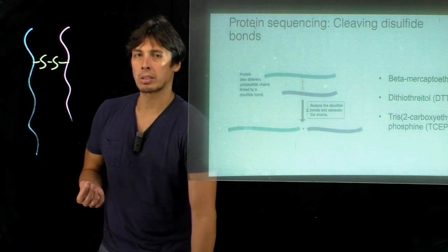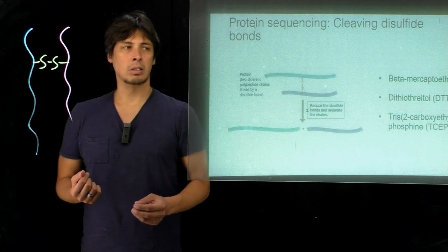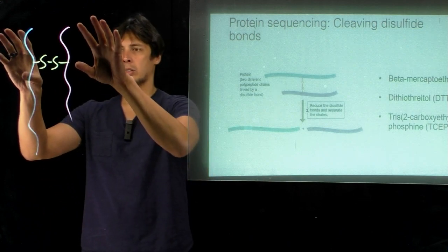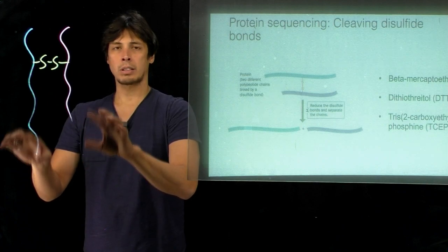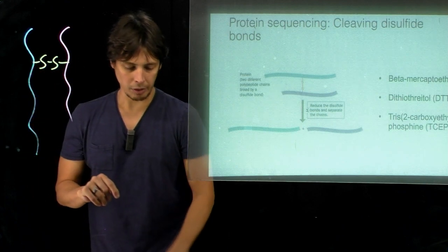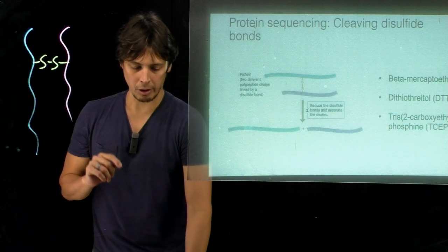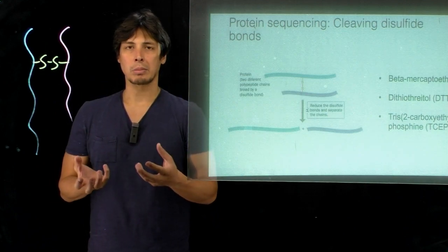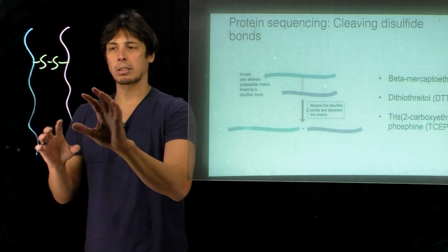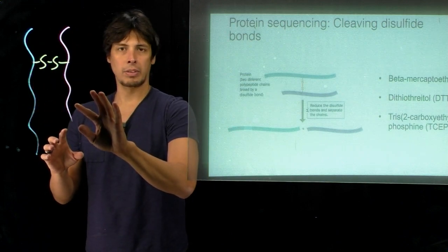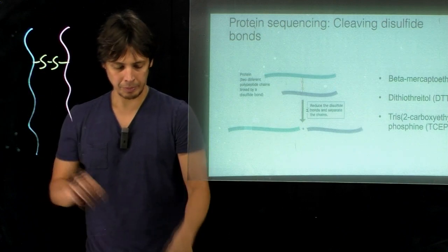First, we need to be able to separate subunits. For instance, if we have two amino acid strands that have cysteines linked together by a disulfide bond shown here in this figure, we need to unlink this covalent attachment so that we can individually look at the amino acid sequence of each peptide.